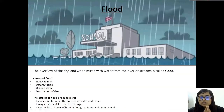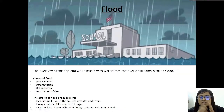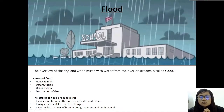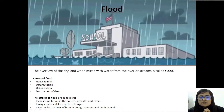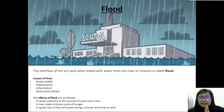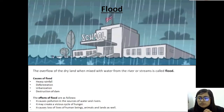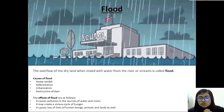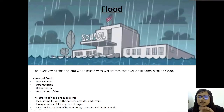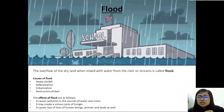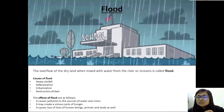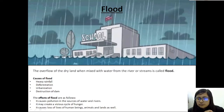Now first we will see what is flood. Flood is the overflow of dry land when mixed with the water from the river or the stream. When the dry land mixes with water from rivers and streams, that is called flood.